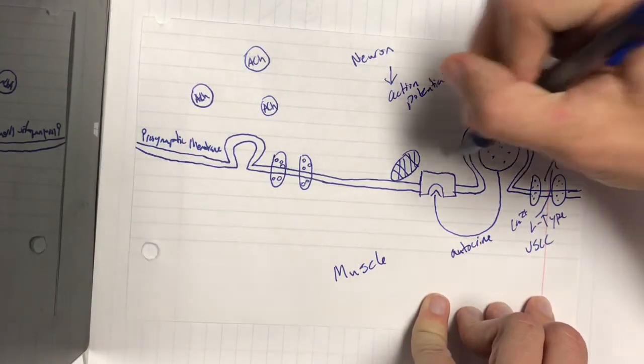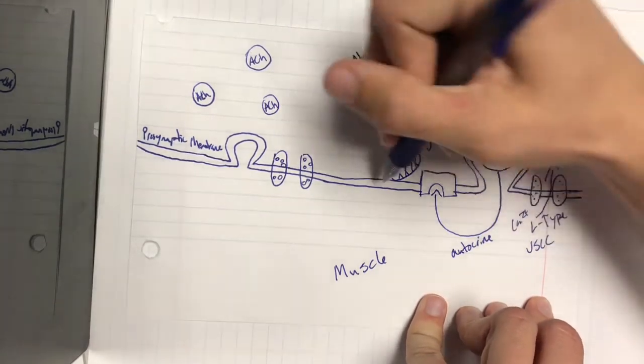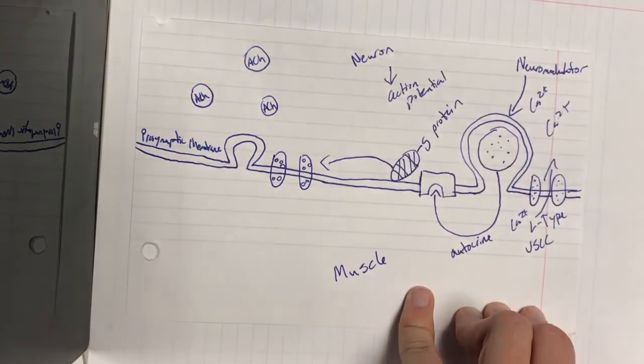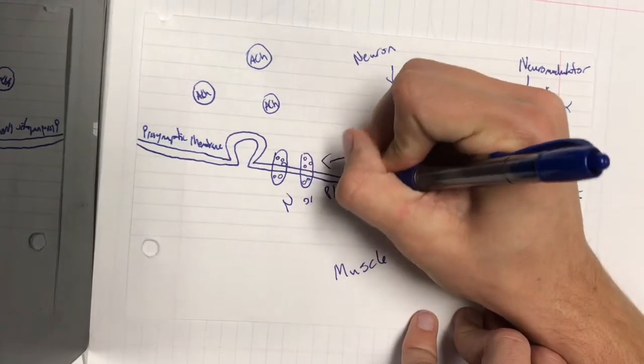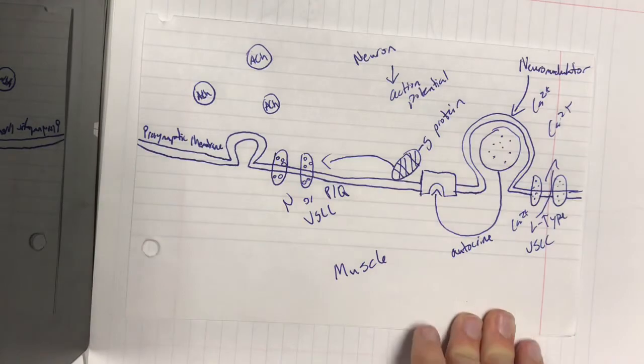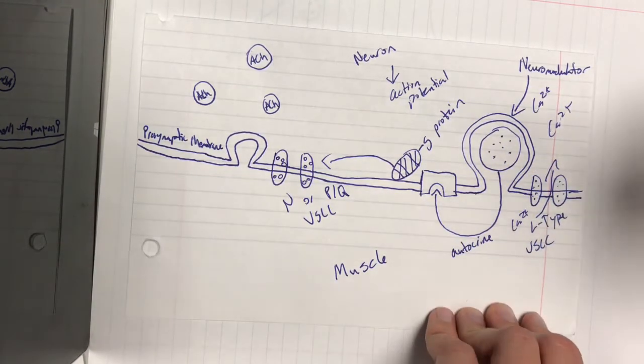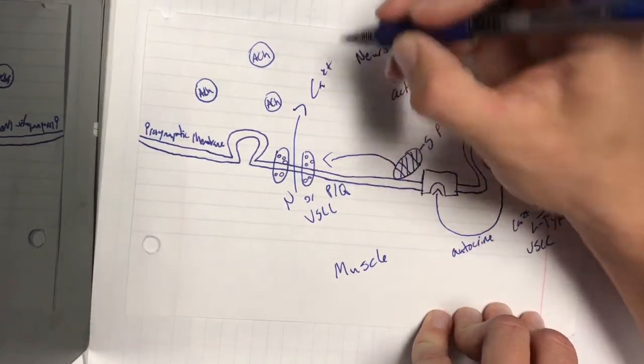This signals a G-protein right here to move along the membrane to N-type or PQ-type VSCCs which again are voltage sensitive calcium channels. This causes even more calcium to rush into the neuron.